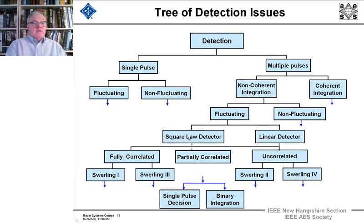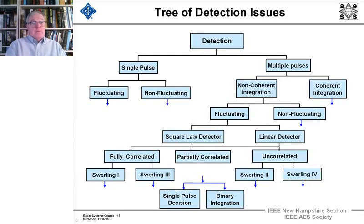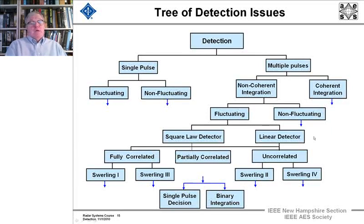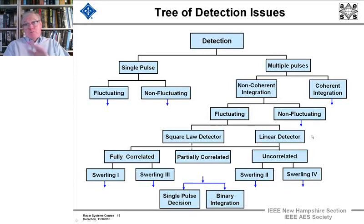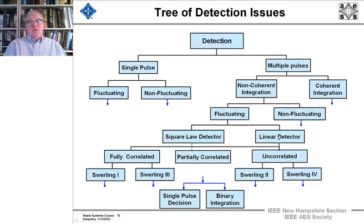We can then go into either a square law detector or a linear detector. The linear detector deals with voltage, and the square law detector deals with power. In the past — many decades ago — people used a logarithmic detector because some backgrounds, such as sea clutter, fluctuated and they weren't able to use sophisticated signal processing to drive the clutter down into the noise. The difference between square law and linear detectors is only about 0.2 dB, and since most signal processing today is done in a linear fashion with voltage, linear detection is used most of the time.